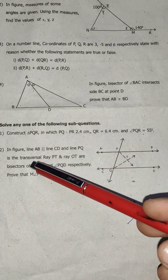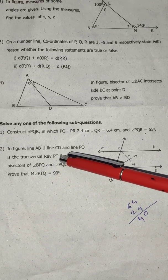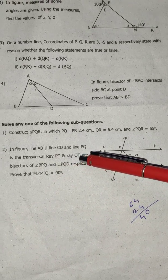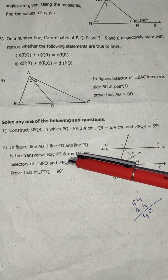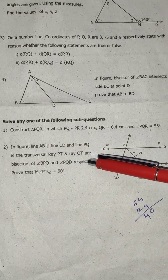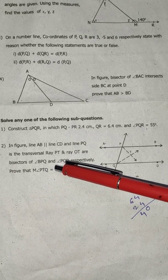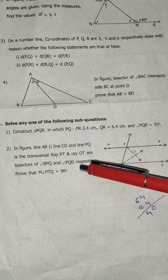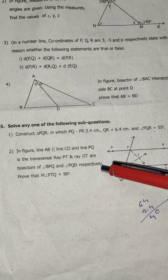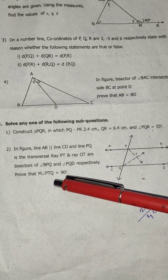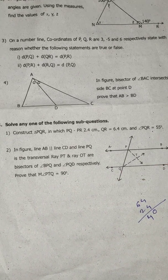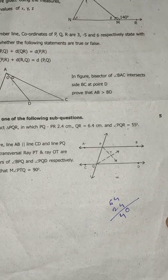In the figure, line AB parallel to line CD and line PQ is the transversal. Ray PT and ray QT are bisectors of angle BPQ and angle PQD respectively. Prove that angle PTQ is equal to 90 degrees.